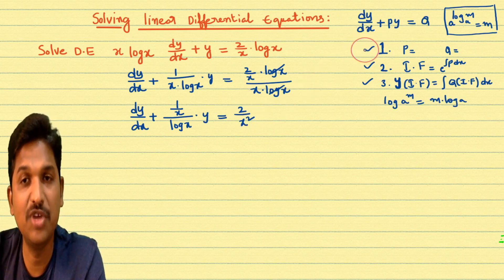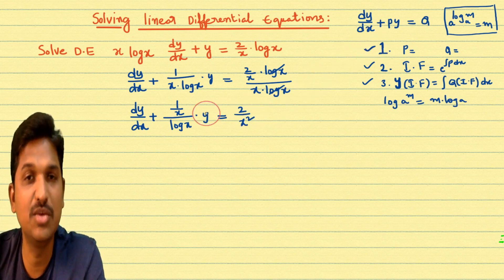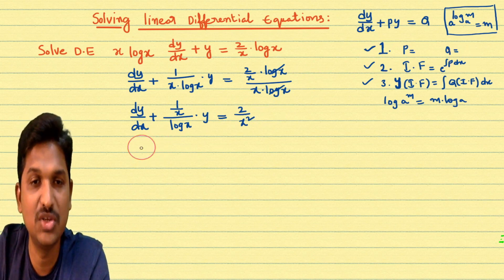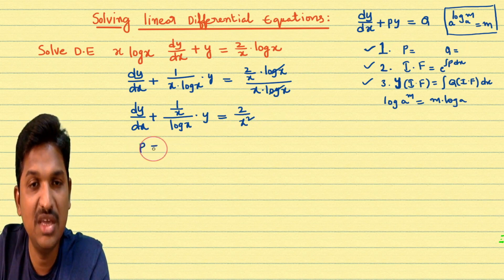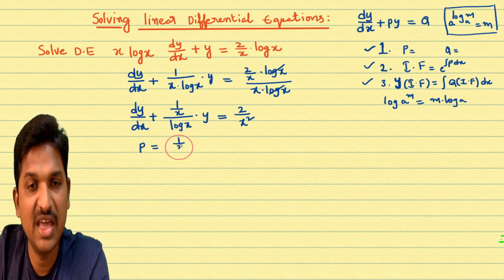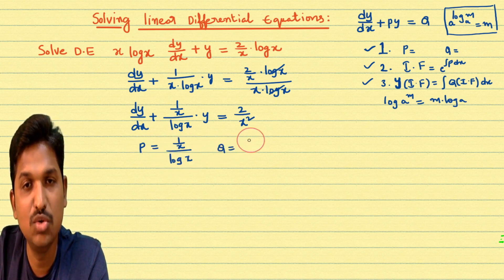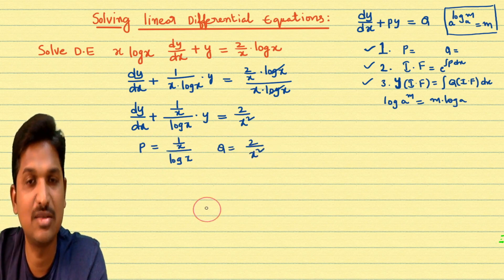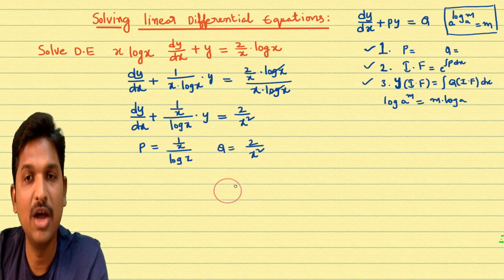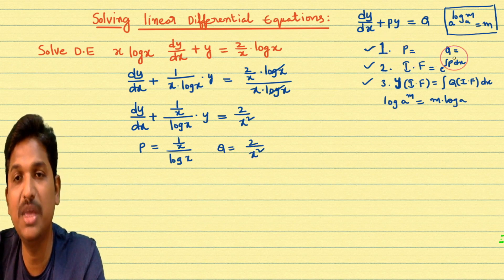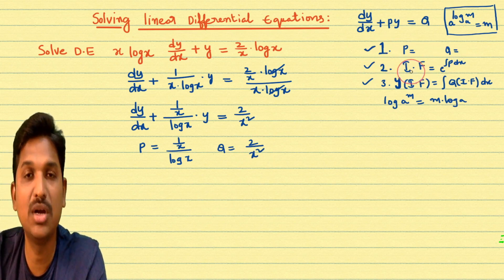What is step 1 to solve this linear differential equation? We identify p and q. Comparing with dy/dx + py = q, we get p = 1/(x·log x) and q = 2/x². First step is complete.